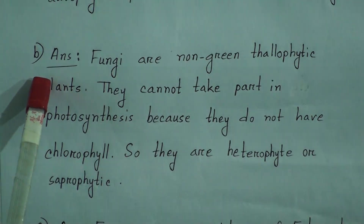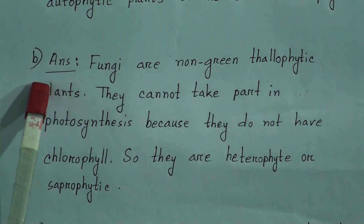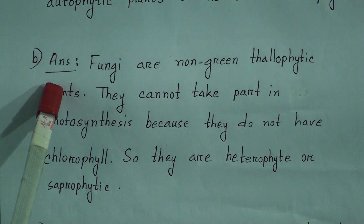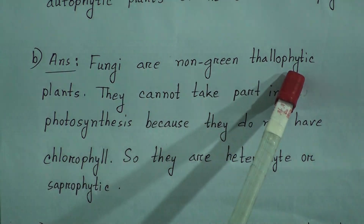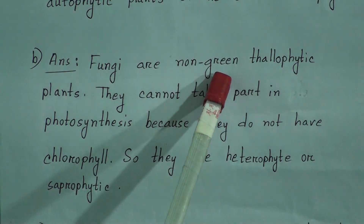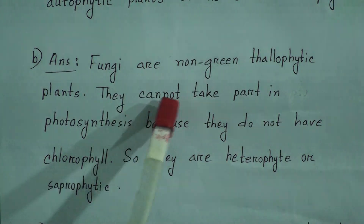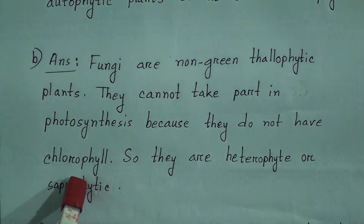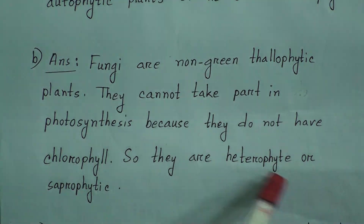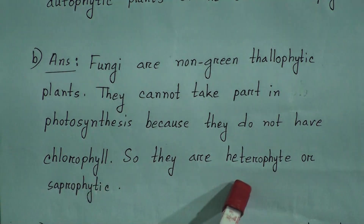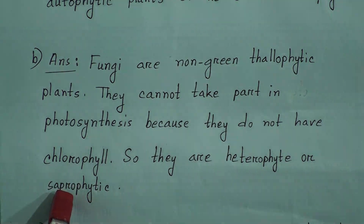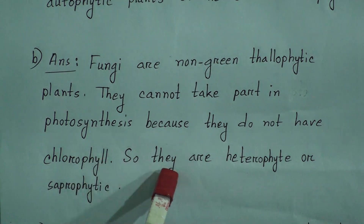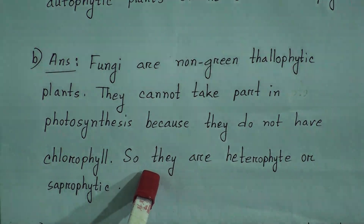B number question was: why are fungi termed as saprophytes? Answer: fungi are non-green thallophytic plants. They cannot take part in photosynthesis because they do not have chlorophyll. So they are heterophytes or saprophytes. Because they don't have chlorophyll and they can't make their food by themselves, they depend on other organisms for their food.